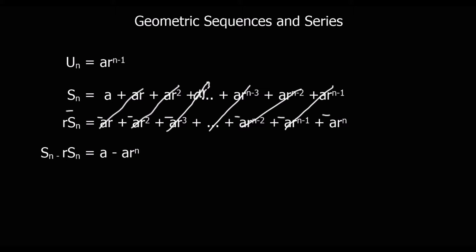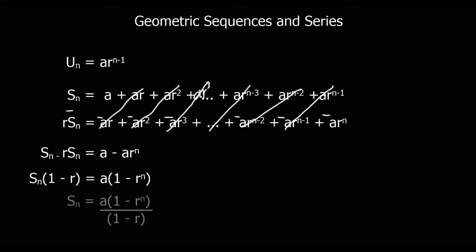So we want Sn by itself. What we do is factorize: we factorize Sn out of the left side, which leaves us with Sn outside the bracket and (1 - r) inside the bracket. We've also factorized on the right side — take an a out of the bracket — so we've got a(1 - r^n) on the right side. Then we just divide by (1 - r), and that gives us our final formula. That's a proof you need to know and be able to do.